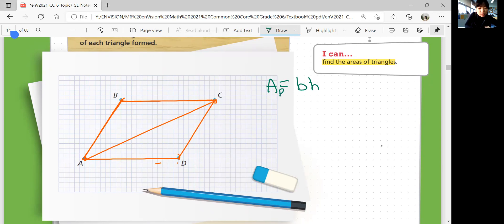So base is going to be how many units? 2, 4, 6, 8, 10, 12, 14, 16, 18. 18 units is the base. And then the height is going to be the height from B, perpendicular to AD, or C, perpendicular to the line extension of AD. So I'm going to draw a perpendicular line over here. I'm going to count that. 2, 4, 6, 8, 10, 12. That's 12 units height.